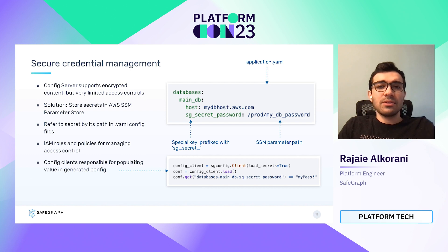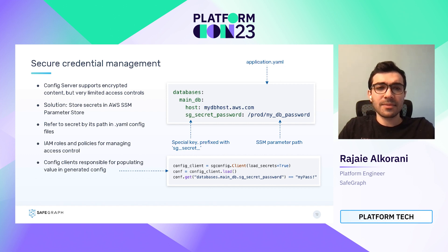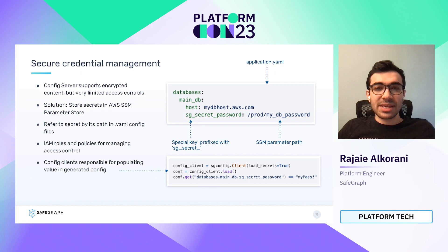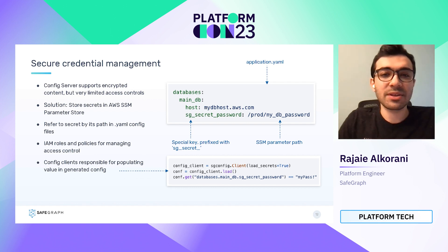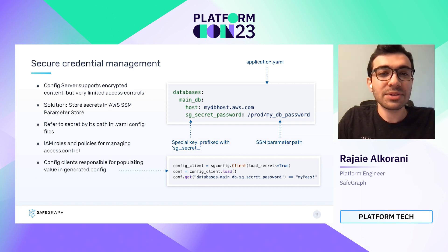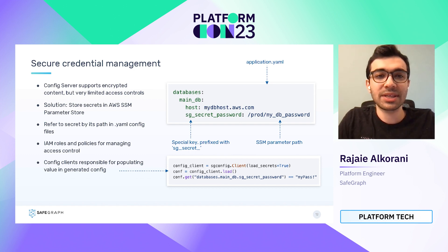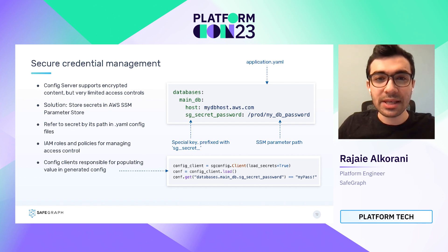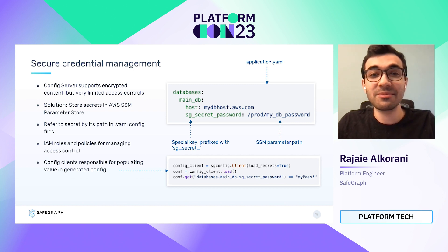As for managing secrets, we definitely didn't want to store them as plain text in our configuration files. Although Spring Config Server supports encrypted content, it had very limited access controls, which didn't meet our needs. So our solution was to store secrets in AWS SSM parameter store, and to refer to those secrets using their path in the YAML config files. The configuration key starts with a special prefix, 'sg_secret', and that prefix tells our config libraries to automatically fetch the parameter's value and populate it into the configuration object returned by the client. That way, our users don't need to manually handle loading any secrets from SSM. And since we're using an AWS service, we can easily use IAM rules and policies to manage access to our secrets.